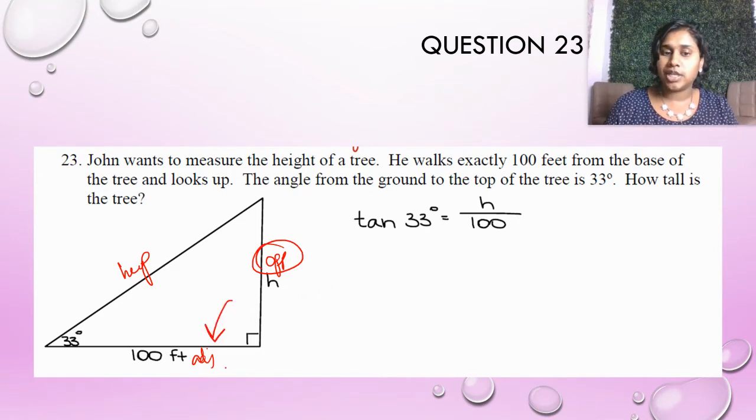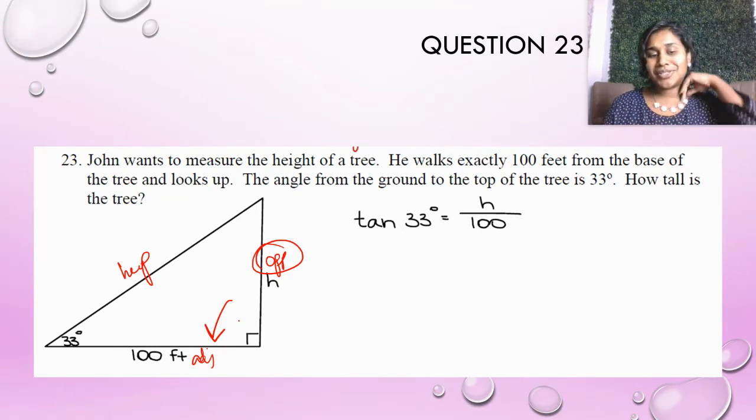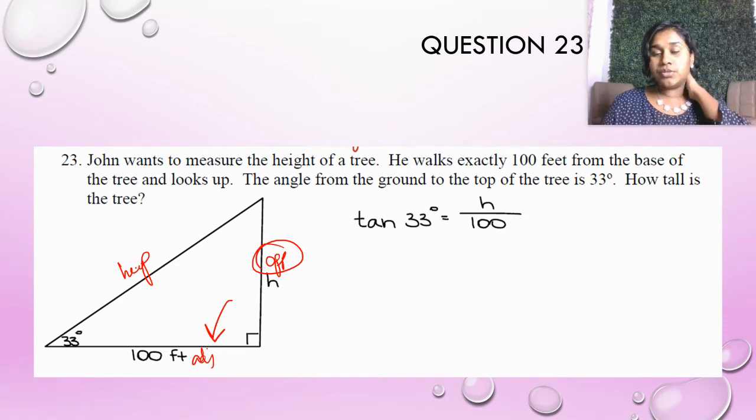Well, I would obviously choose the adjacent no matter what because it's one of the given values. But the only other person that uses that is cosine and he needs adjacent and hypotenuse. And so that doesn't really help us. So that's why I chose tan.